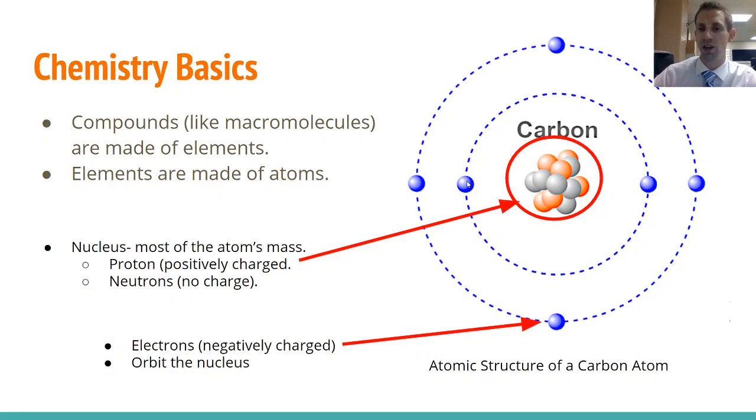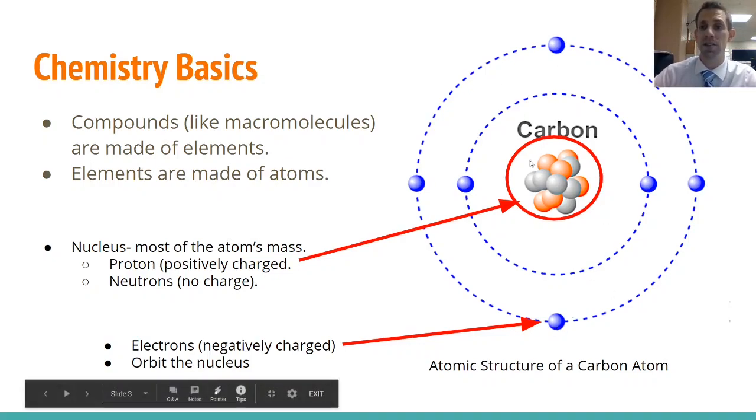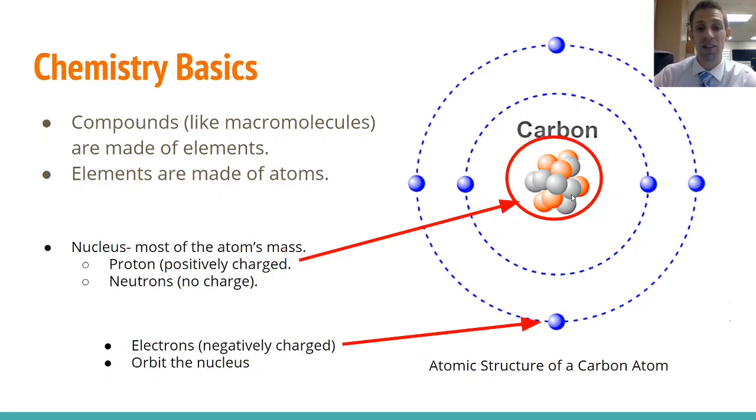The electrons travel in orbits or in a space around the outside of the nucleus. Now this carbon atom specifically has, if we count them, one, two, three, four, five, six electrons, and that's to balance out the six protons inside the nucleus. Six protons, six electrons mean that this would be an atom of carbon that is neutral.